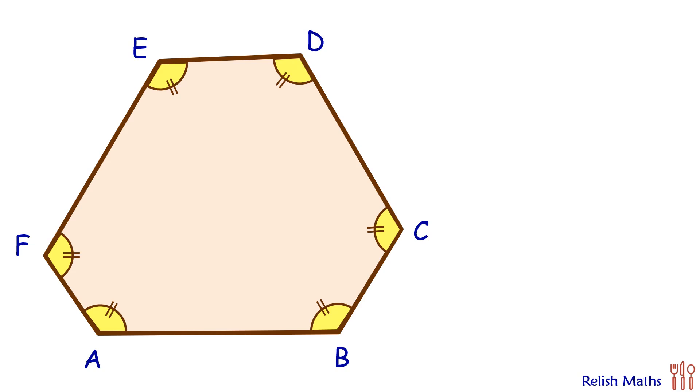This question is about a hexagon with all interior angles equal and four of the side lengths given as 3 cm, 5 cm, 4 cm, and 6 cm. Let the side length FA be M cm and AB be N cm. Using this data, we have to find the values of M and N.